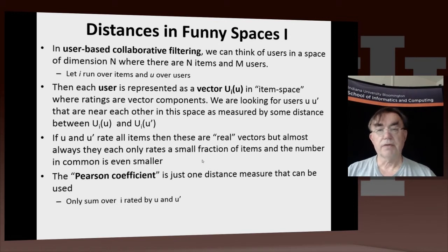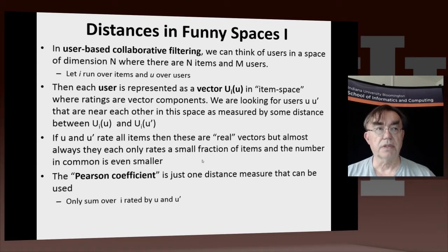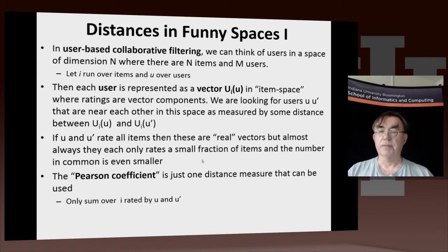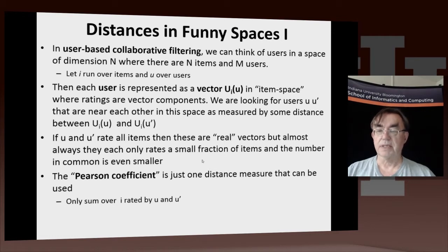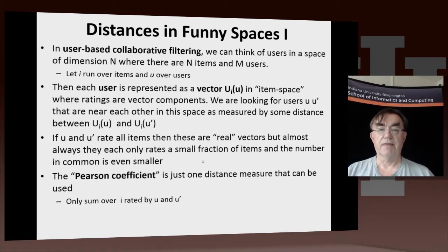It's pretty useful to consider the spaces, and you have to be reasonably creative in the spaces you consider. So in this field of collaborative filtering, which we're going to be discussing, in the simplest case we have two types of things: we have users, and we have items.